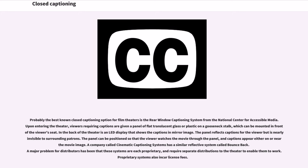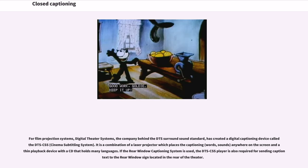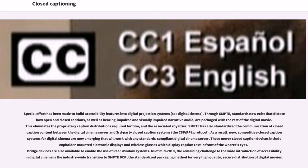A company called Cinematic Captioning Systems has a similar reflective system called Bounce Back. A major problem for distributors has been that these systems are each proprietary and require separate distributions to the theater to enable them to work, also incurring license fees. Digital Theater Systems, the company behind the DTS Surround Sound Standard, has created a digital captioning device called DTS CSS — a combination of a laser projector which places the captioning anywhere on the screen and a playback device with a CD that holds many languages. Through SMPTE standards, open and closed captions as well as hearing-impaired and visually impaired narrative audio are now packaged with the rest of the digital movie.